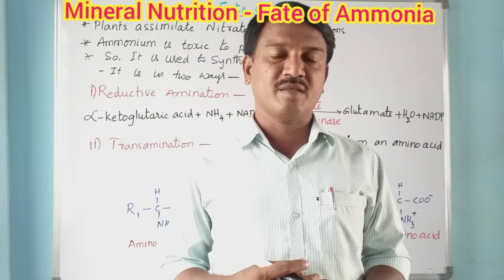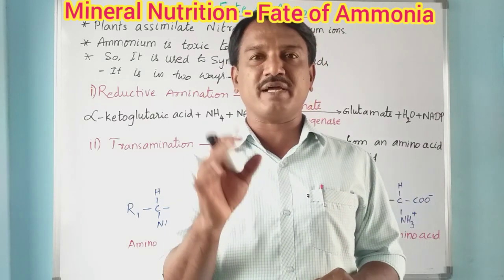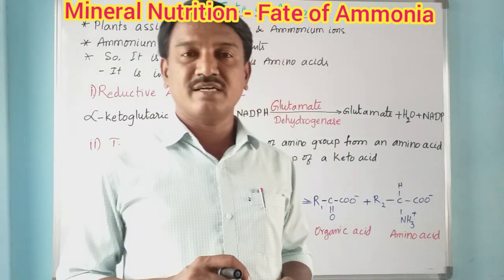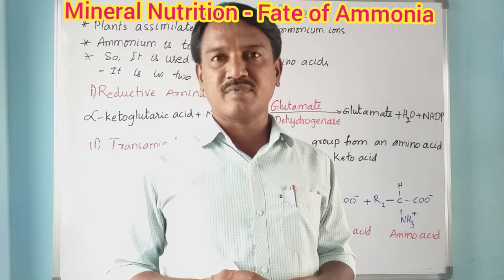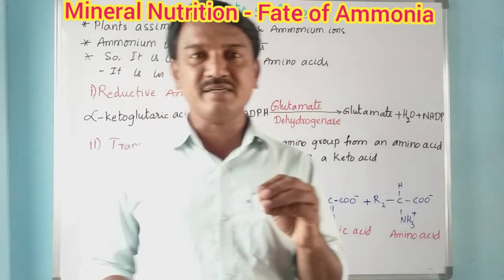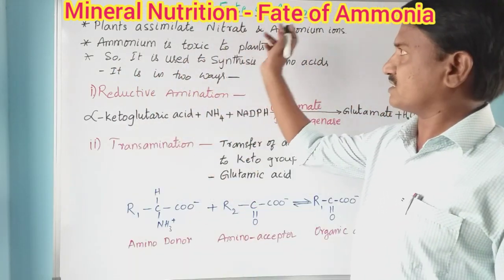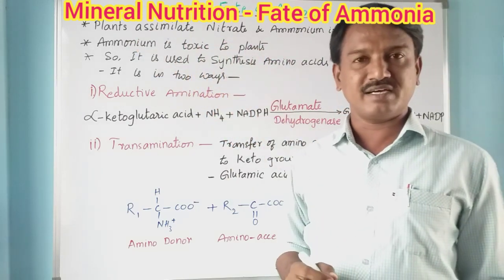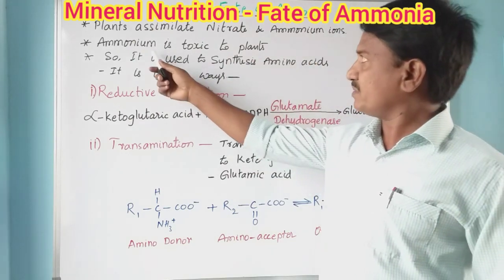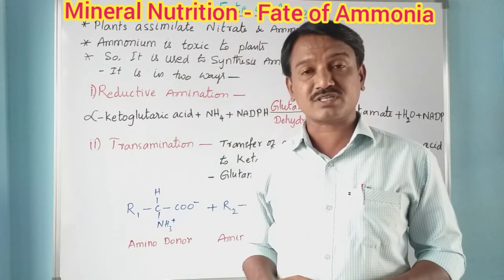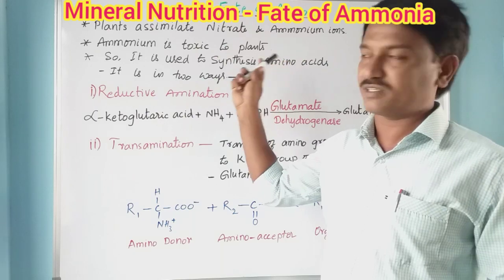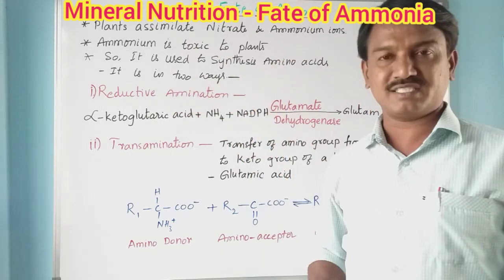Nitrogen is available to plants mostly in the form of nitrates and also ammonia. These nitrates and ammonia are absorbed by plants. Ammonia converts into ammonium ions, but ammonium ions are toxic to plants. So the plants convert ammonium ions into amino acids.